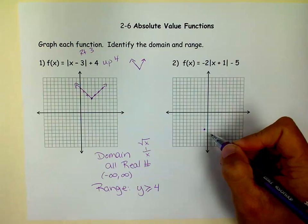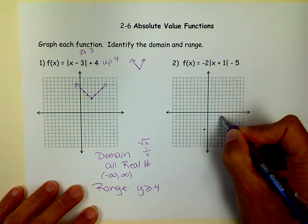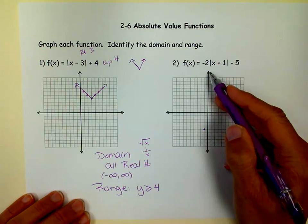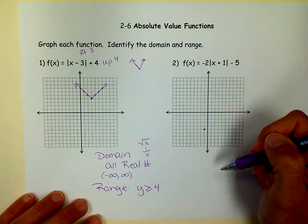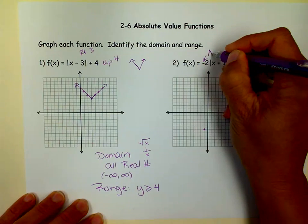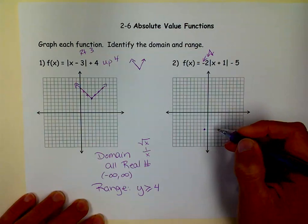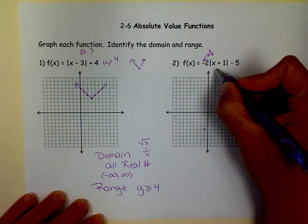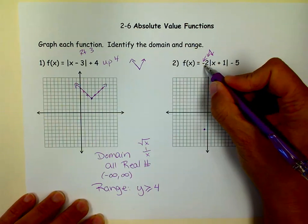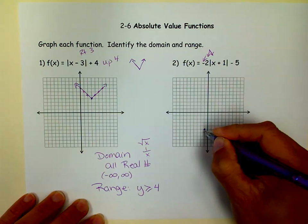Now, normally, on an absolute value function, like this one, when it's not vertically stretched or shrunk, I would just go up 1 over 1. Well, I can't now. Because now, it's a factor of 2 on the up and down scale. So, remember that this tells you that it's upside down. This tells you it got skinnier. And this shifted it left and right, up and down. So, if you're not sure, remember, just put a number in. So, 0 plus 1 is 1. The absolute value of 1 is 1 times negative 2 is negative 2 minus 5 is negative 7. So, when I'm at 0, I'm down negative 7.